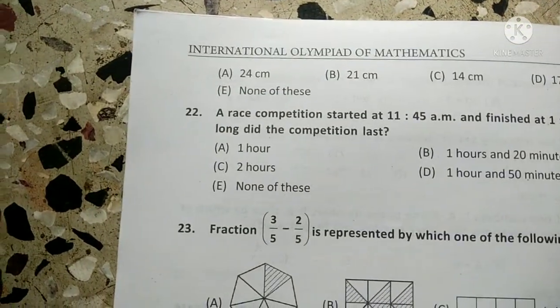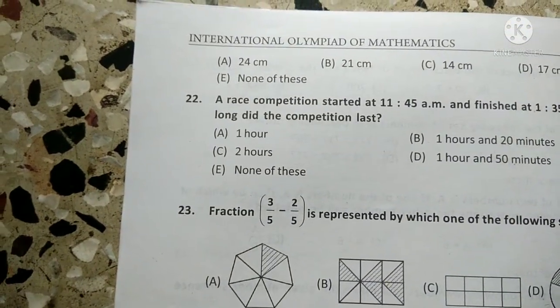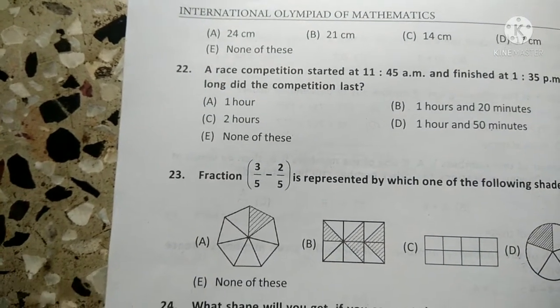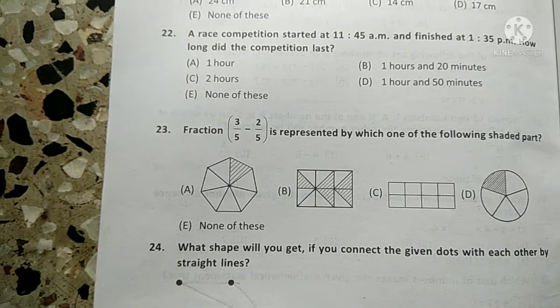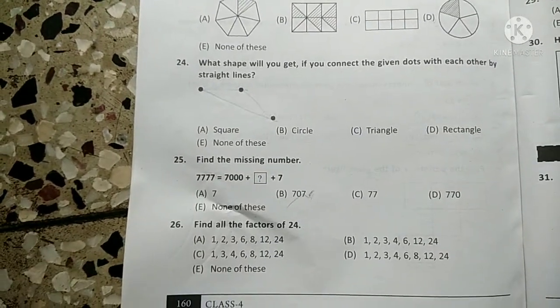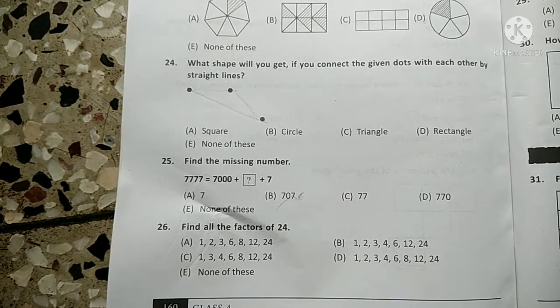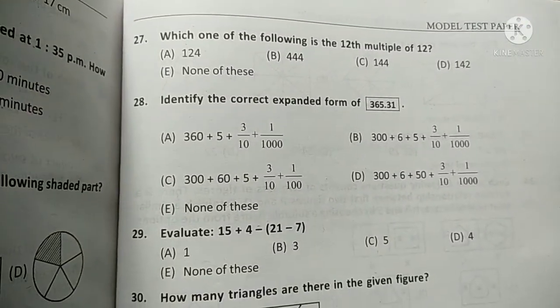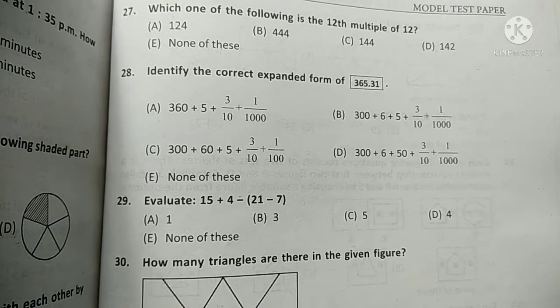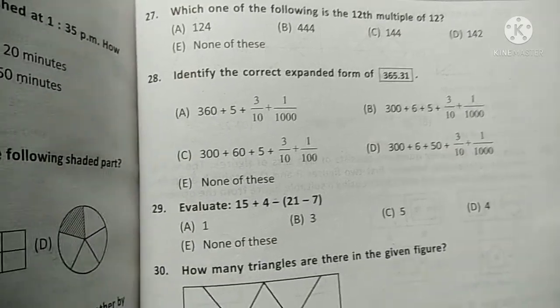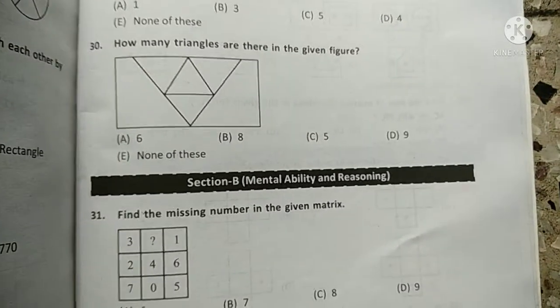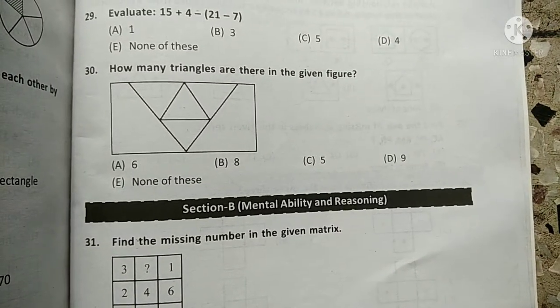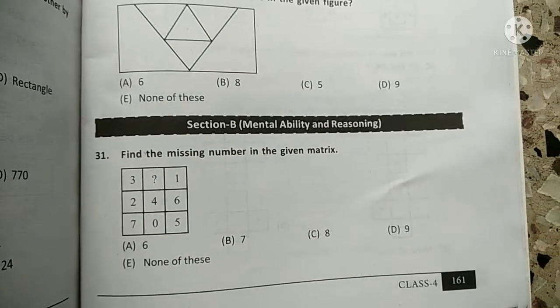These options: question number 21, options ABCD, question number 22, 23, 24, 25, 26, 27, 28, 29, 30, 31.